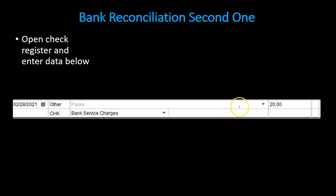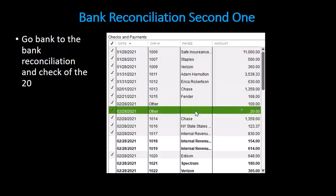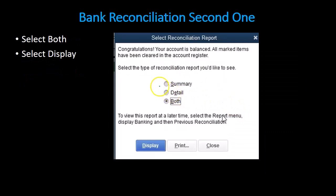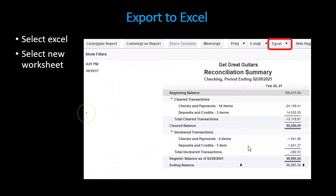We'll do the same thing for the service charges — we're just entering this into the register so that we can then enter it in the bank reconciliation. This will make more sense as we work through this in Excel. Then we can check that off and create the bank reconciliation. The QuickBooks system has two reconciliation types: a summary and a detail. We recommend both of them, but the summary looks something like this.